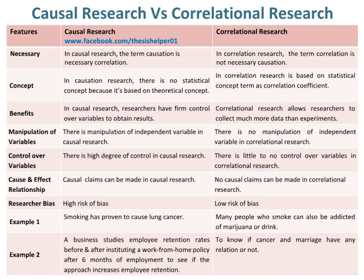Causal claims can be made in causal research, whereas no causal claims can be made in correlational research. Researcher bias in causal research carries a high risk of bias, whereas researcher bias in correlational research carries a low risk of bias.